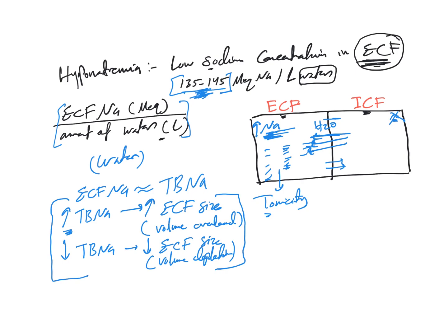Total body sodium mainly correlates with extracellular fluid size — volume overload or depletion — but has nothing to do with sodium concentration, because every time total body sodium decreases or increases, water steps in to keep the concentration in range. This tells you that hyponatremia and hypernatremia are water problems rather than sodium content problems. Sodium control mechanisms affect ECF volume but have nothing to do with sodium concentration.